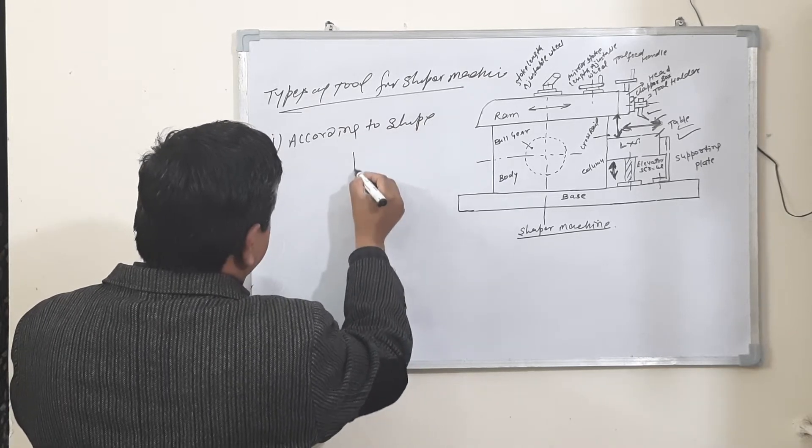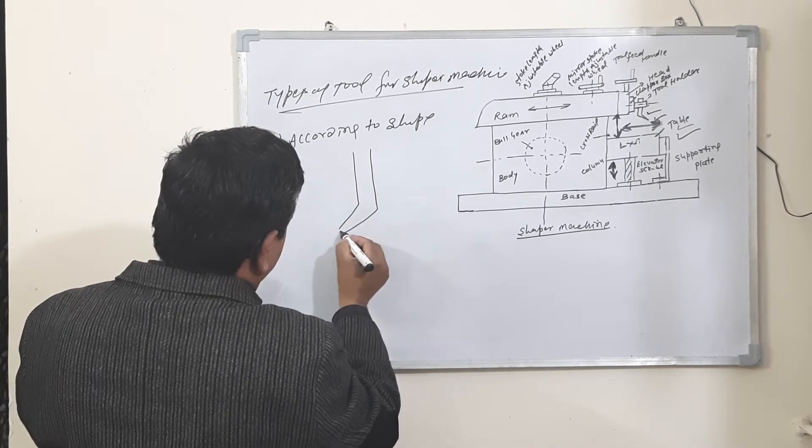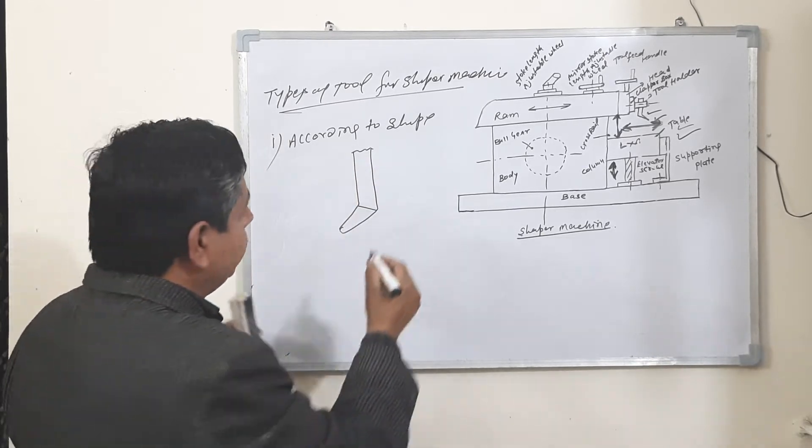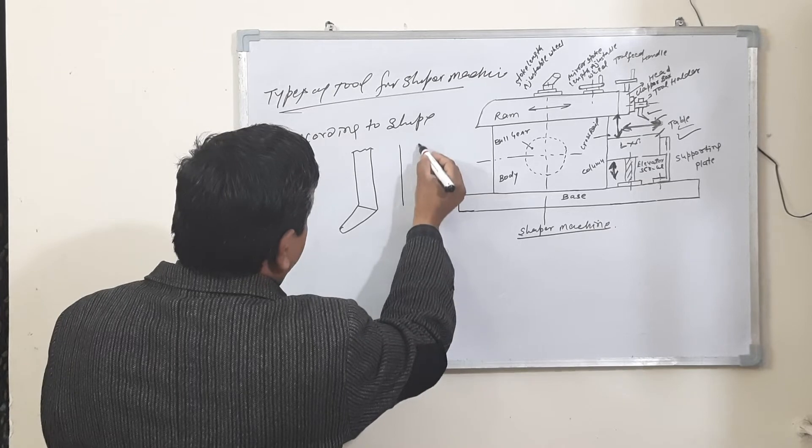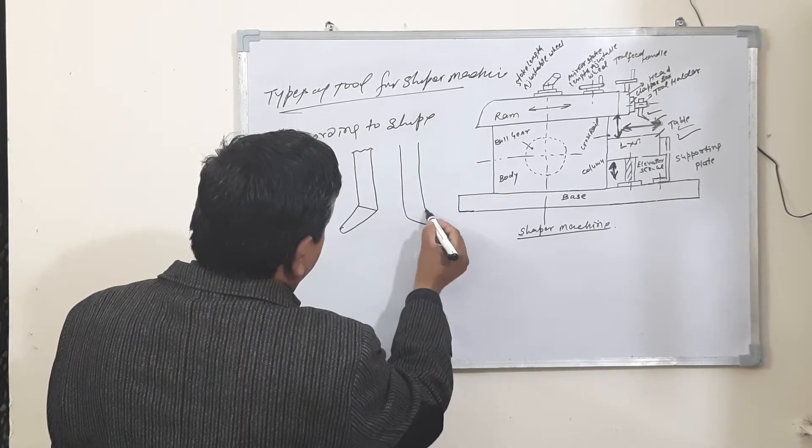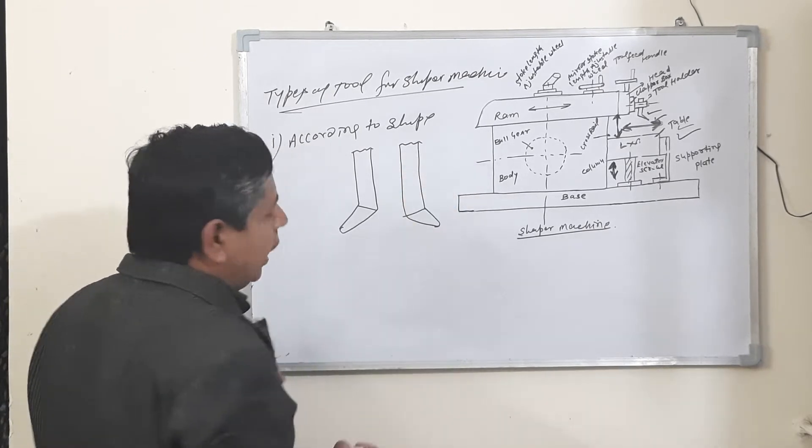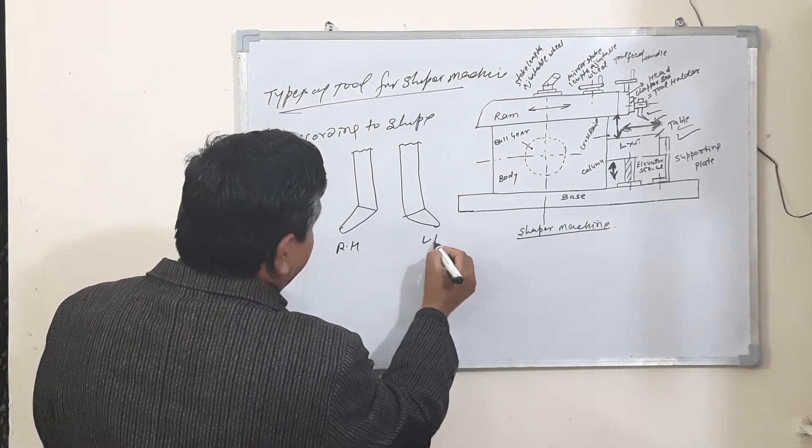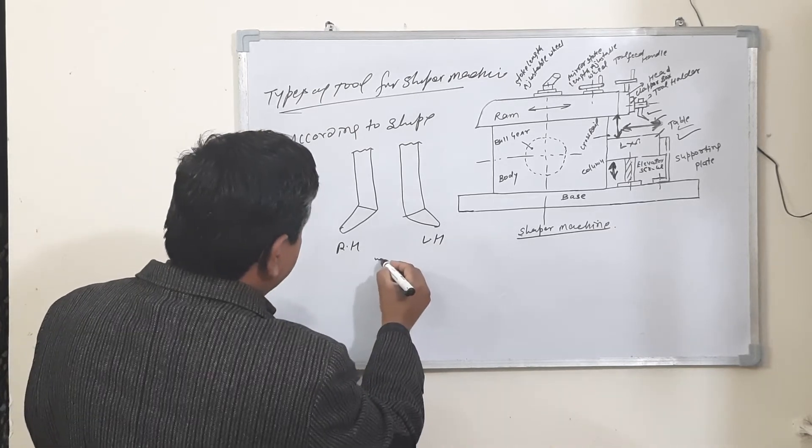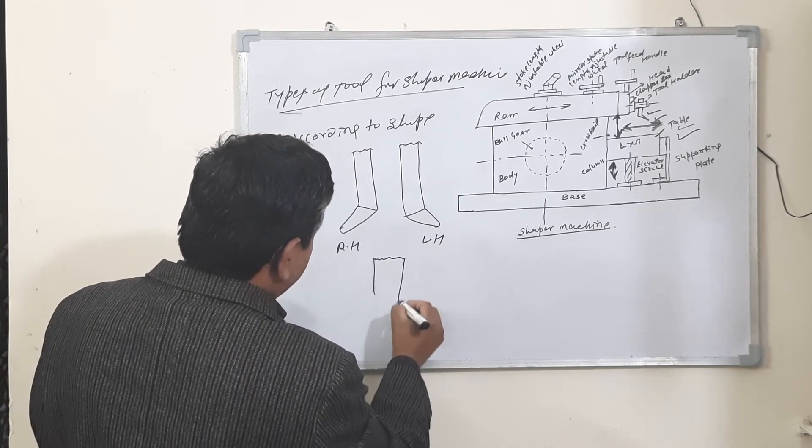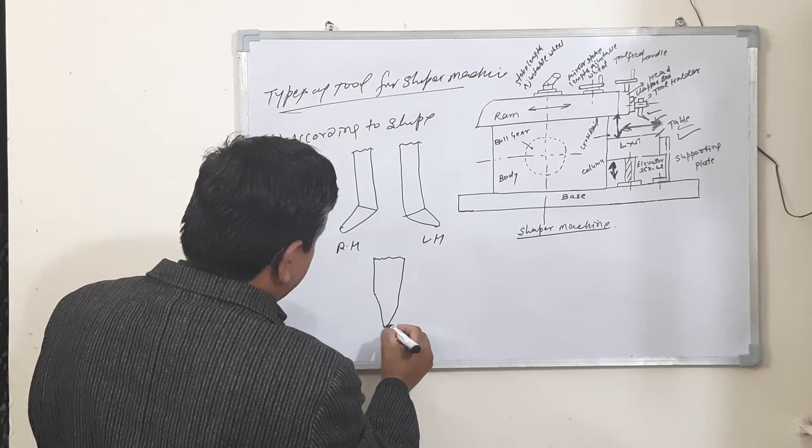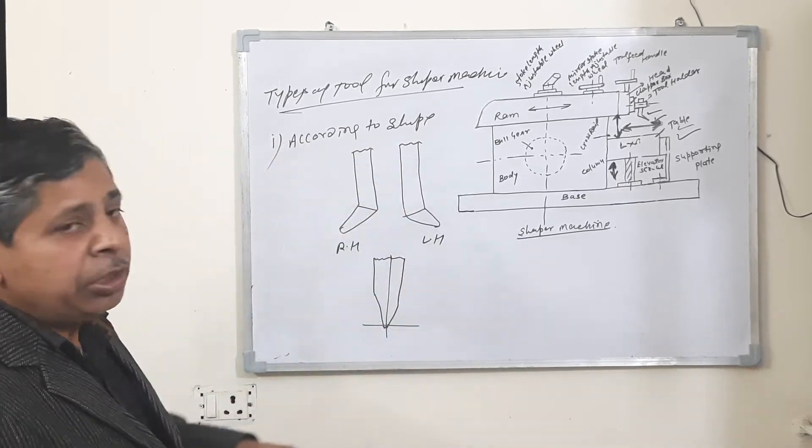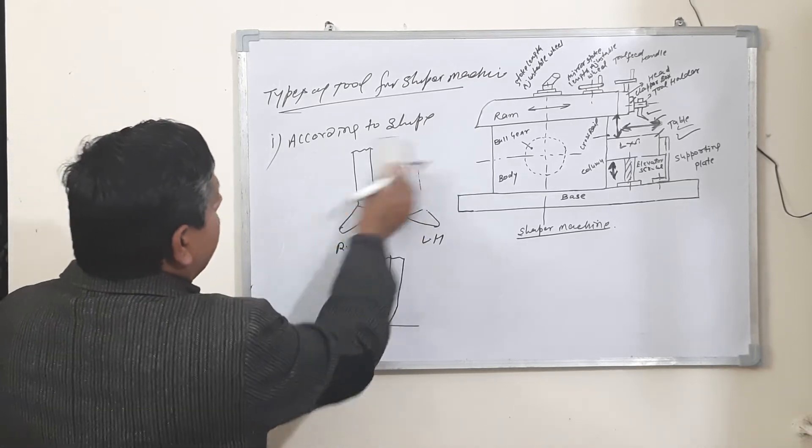Like this, right hand side. Like this, left hand side. Right hand side, left hand side, and V-shape according to the shape, which are used on a shaper machine.